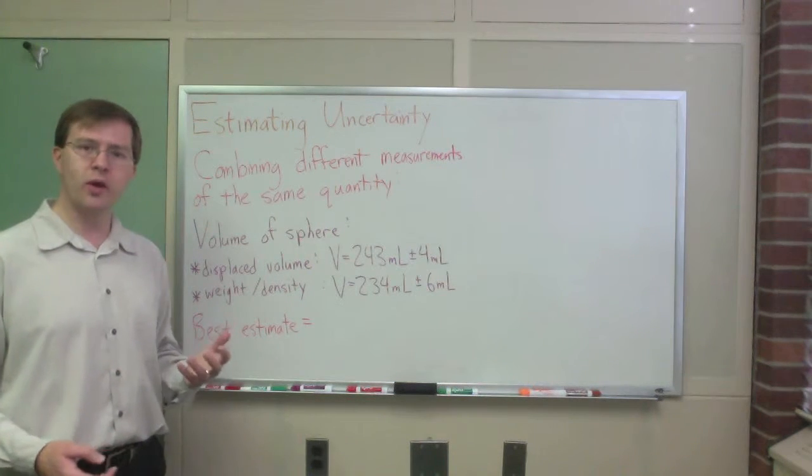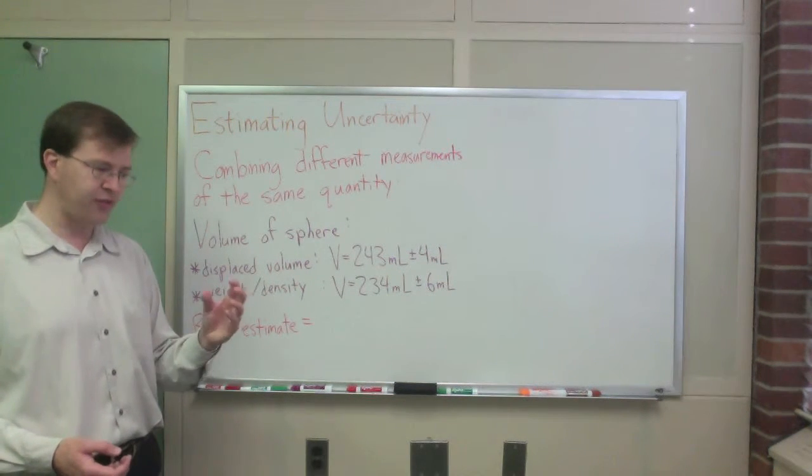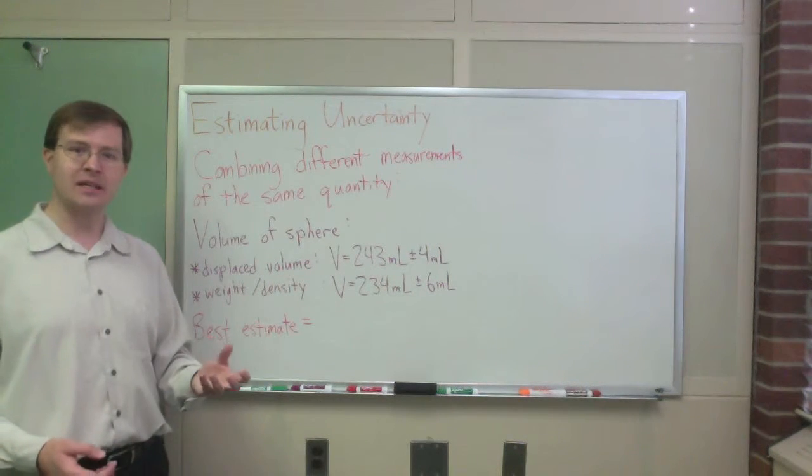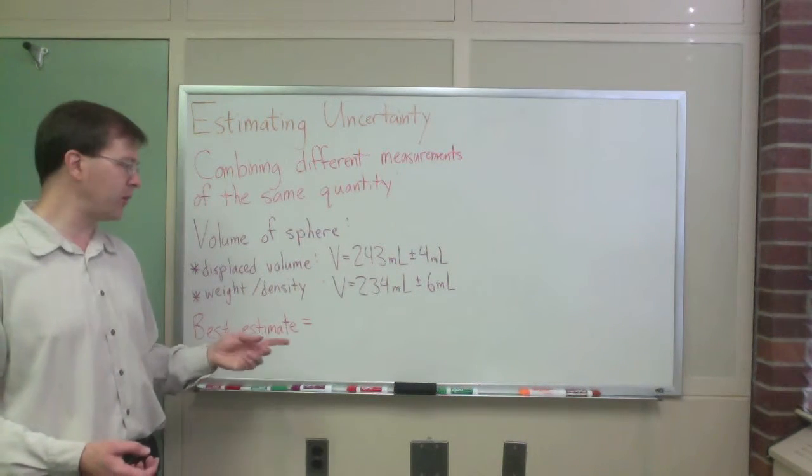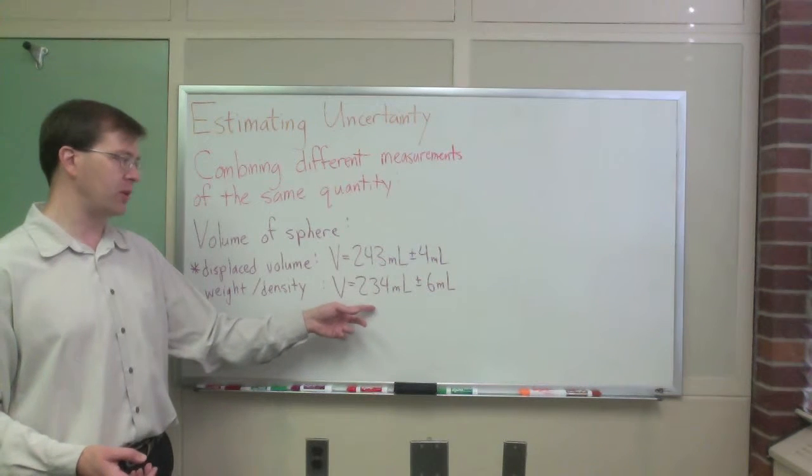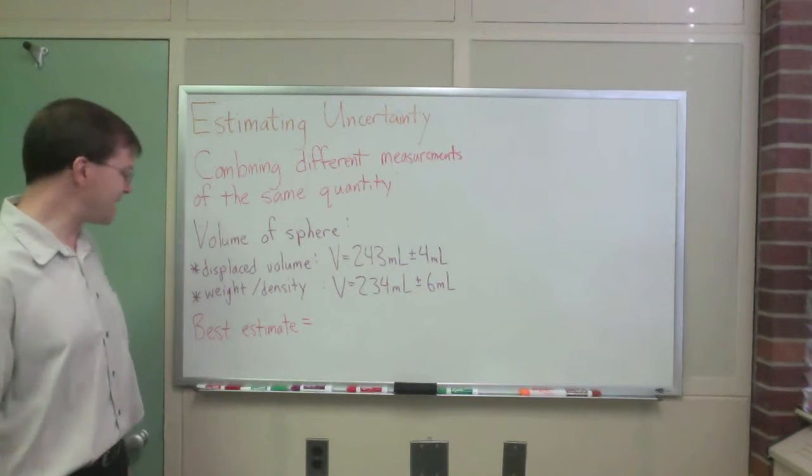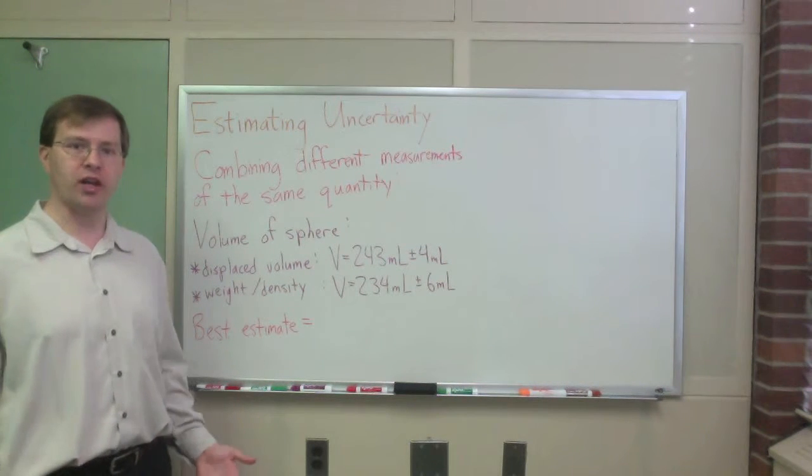And then another way I tried to do it, I took the sphere and I weighed it, got a mass, then divided by the density, a known density for the material, and I came up with this 234 milliliters, plus or minus 6 milliliters result. I want to know what's the best estimate for the actual volume of my sphere.